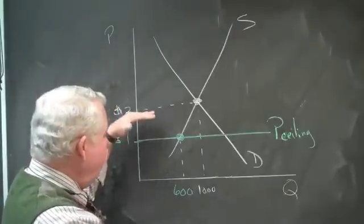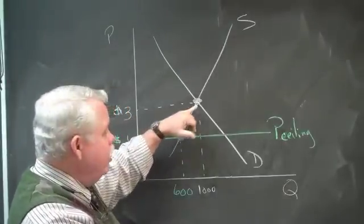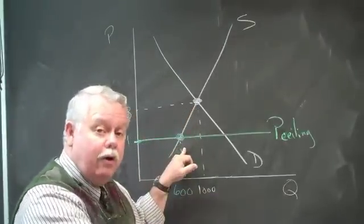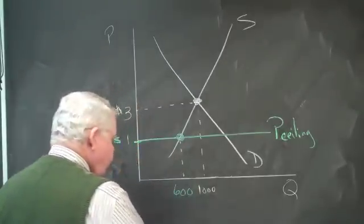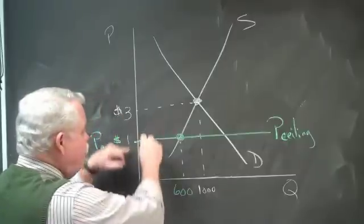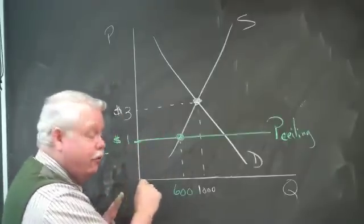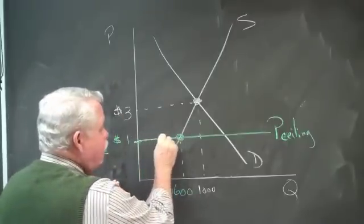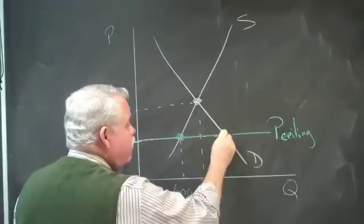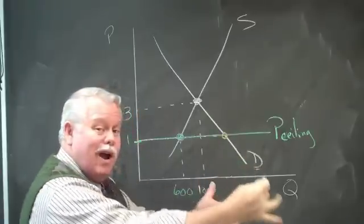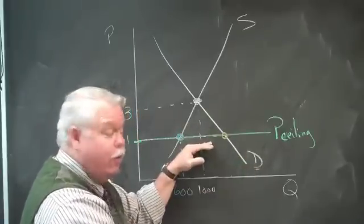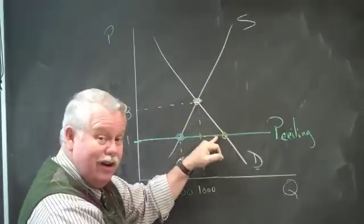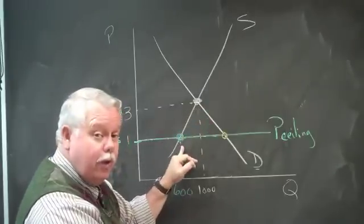So, by imposing this artificially low price, you have reduced the willingness of suppliers to supply the product. And what else have you done? By reducing the price, look at the buyers. Buyers, seeing a smaller price, read over to the demand curve, they want to buy more. It's cheaper, so let's buy more. An increase in the quantity demanded, a decrease in the quantity supplied.